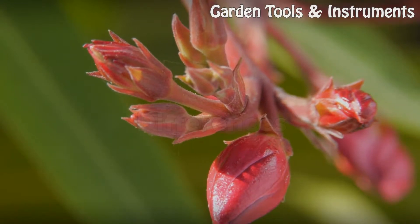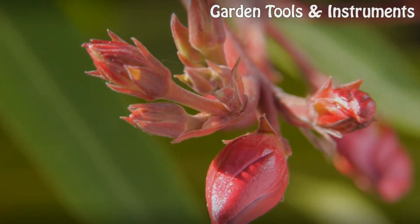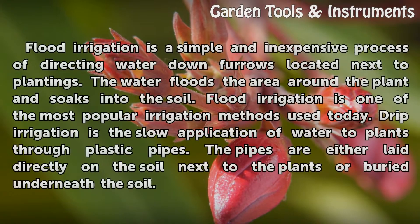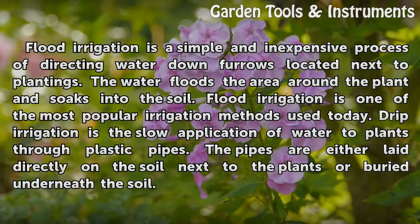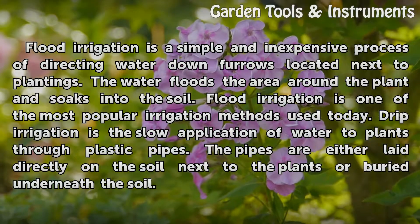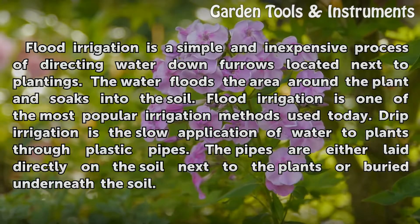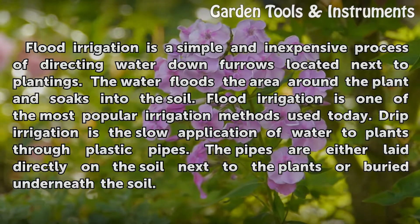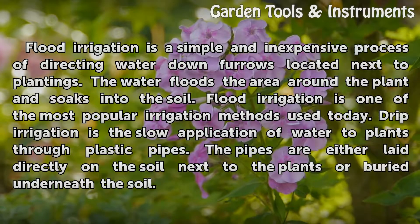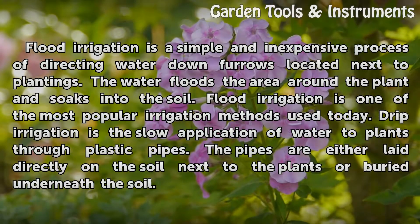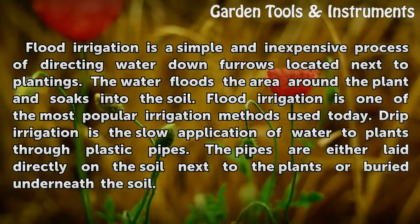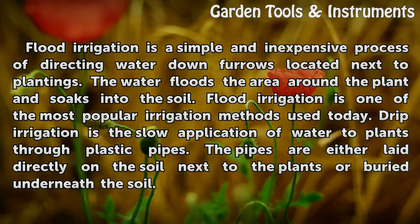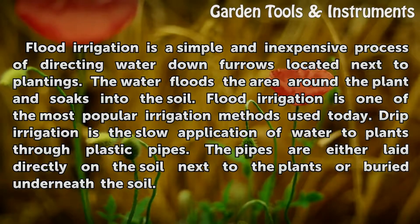Differences. Flood irrigation is a simple and inexpensive process of directing water down furrows located next to plantings. The water floods the area around the plant and soaks into the soil. Flood irrigation is one of the most popular irrigation methods used today. Drip irrigation is the slow application of water to plants through plastic pipes, which are either laid directly on the soil next to the plants or buried underneath the soil.